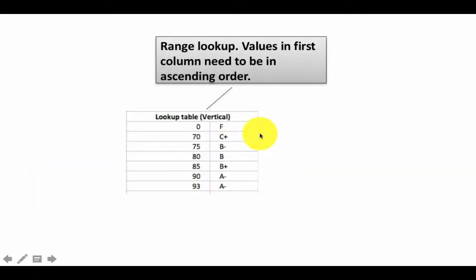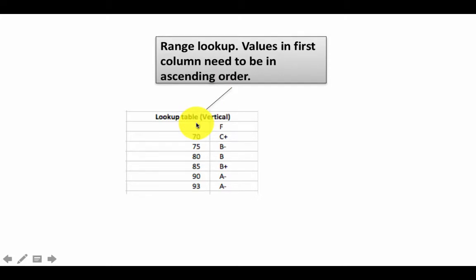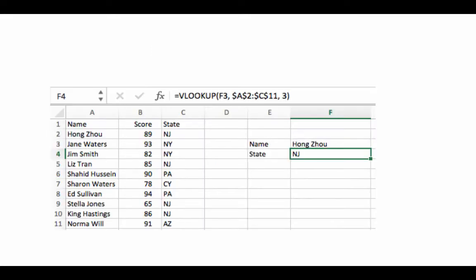What we did is provide the lookup table and ask Excel to find the range into which a value falls. This kind of lookup is called a range lookup — we're asking what range the value falls into, then retrieving the corresponding value from the second or third column or row. By default, when you use HLOOKUP or VLOOKUP, Excel performs a range lookup.